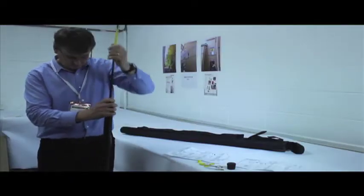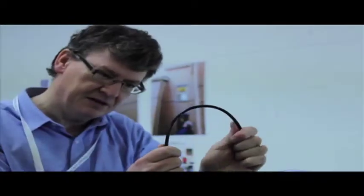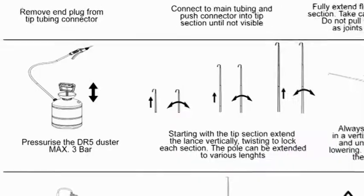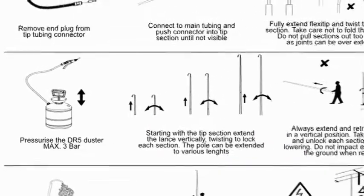Fully extend flexi tip and twist to lock each section. Take care not to fold the tip sharply. Pressurize the DR5 duster max 3 bar.